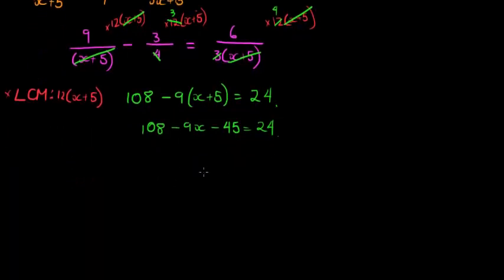And that simplifies to, well let's see, negative 9X, 108 minus 45 gives me 63, positive 63 equals to 24.